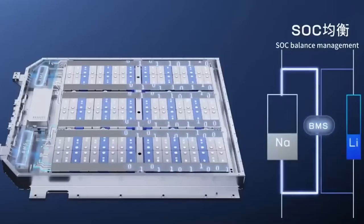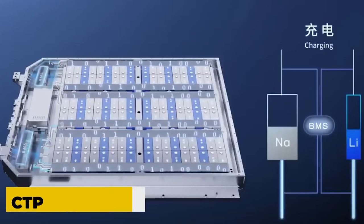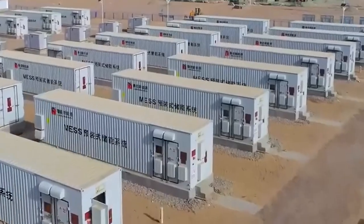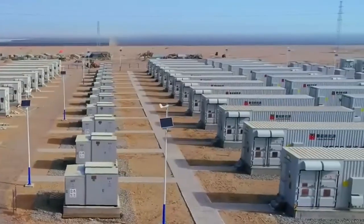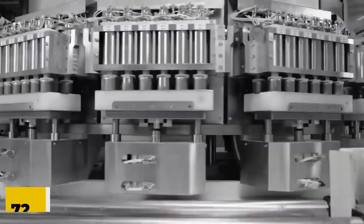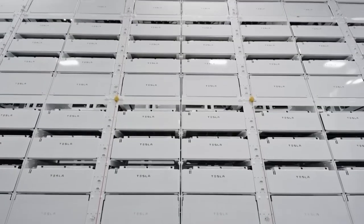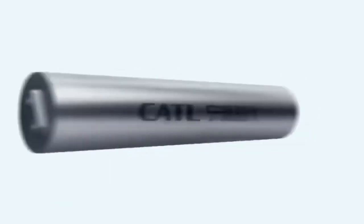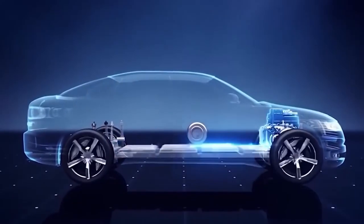According to CATL, the Qi Lin battery, also known as the CTP 3.0 battery, offers the highest level of integration in the world with a volume utilization efficiency of 72% and an energy density for ternary battery systems of up to 255 watt-hours per kilogram.